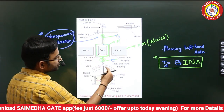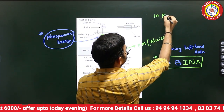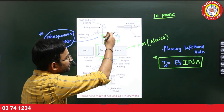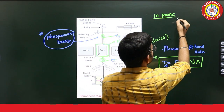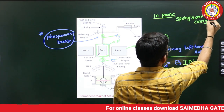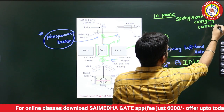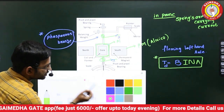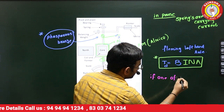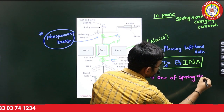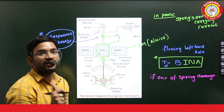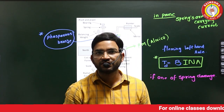The first question: in PMMC instruments, the springs carry the currents. So in PMMC, springs are carrying the currents. If one spring is damaged, what happens? This is a very repeated basic question.